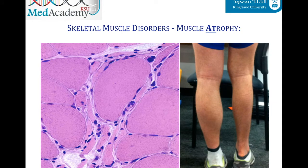Our first pathology is muscle atrophy, which is the reduction in the diameter of muscle fibers due to a loss of protein filaments. It is usually caused by disuse — such as in patients who have been bedridden for a long period — or by denervation, which is the loss of motor neurons supplying the muscle fibers.